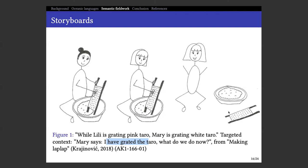It's a very abstract meaning, but the storyboard makes it visible: we see Mary is away from the taro, she already did it, we have the result. This is the meaning I was after — and hopefully the examples will make clear how this relates to the grammatical meaning I'm talking about.